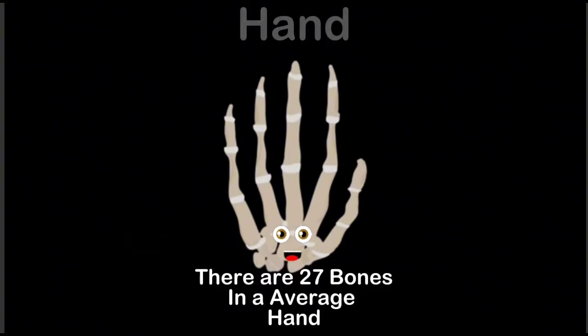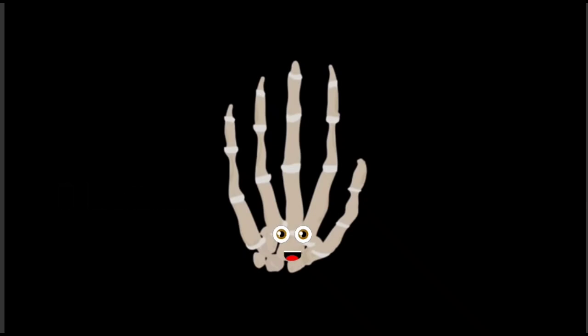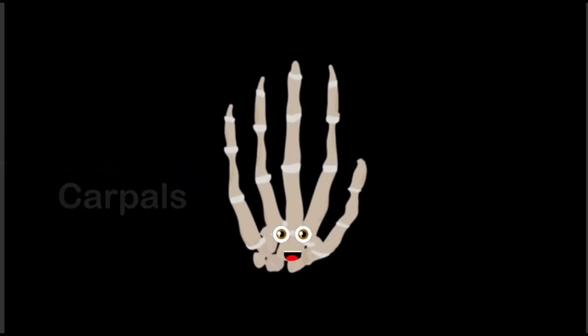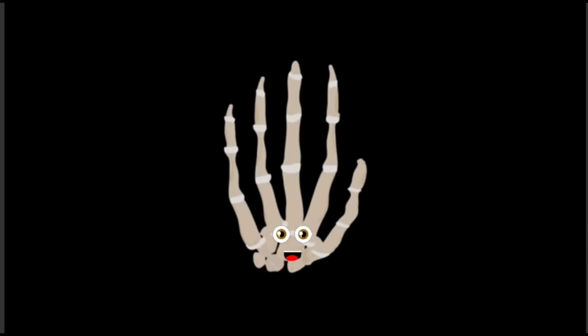Let's look at the 8 bones that connect me to your arm. This group is called the carpals — we'll learn them with some charm. The trapezium bone is at the base of your thumb; it's a small bone and you'll learn it's an important one.